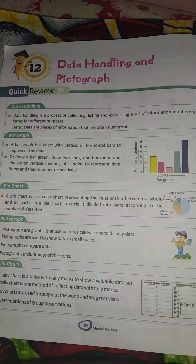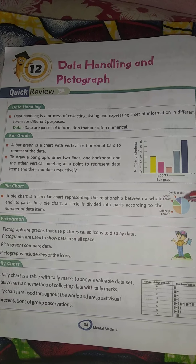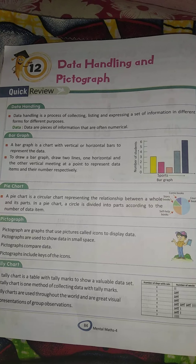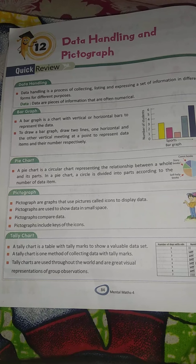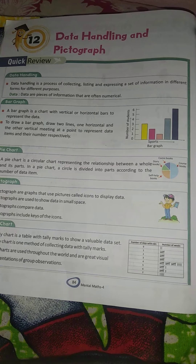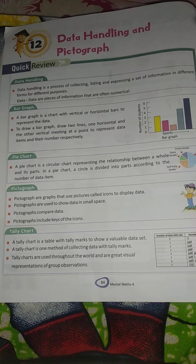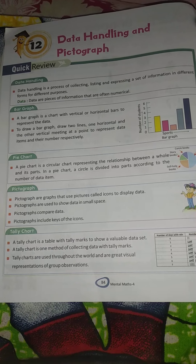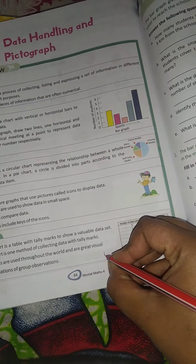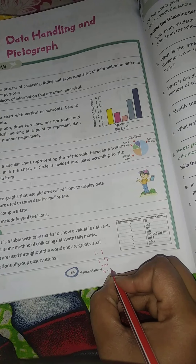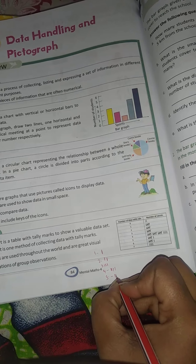The next type is Pie Chart — this is a circle that we represent and divide into different parts to show information. The next type is Pictograph — you can make pictures of your data to show them. The next type is Tally Chart, which uses tally marks. One tally mark indicates 1, and when you reach 5, you draw a diagonal cross line through four marks. This is the method for collecting and organizing data.